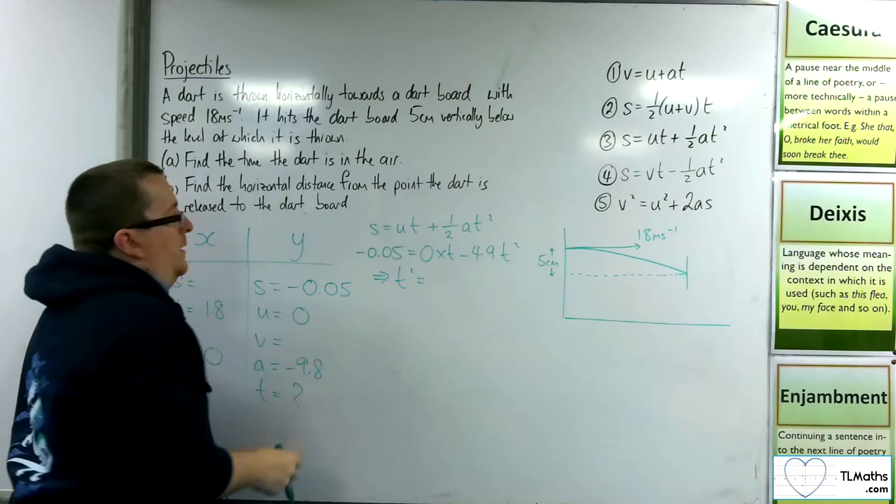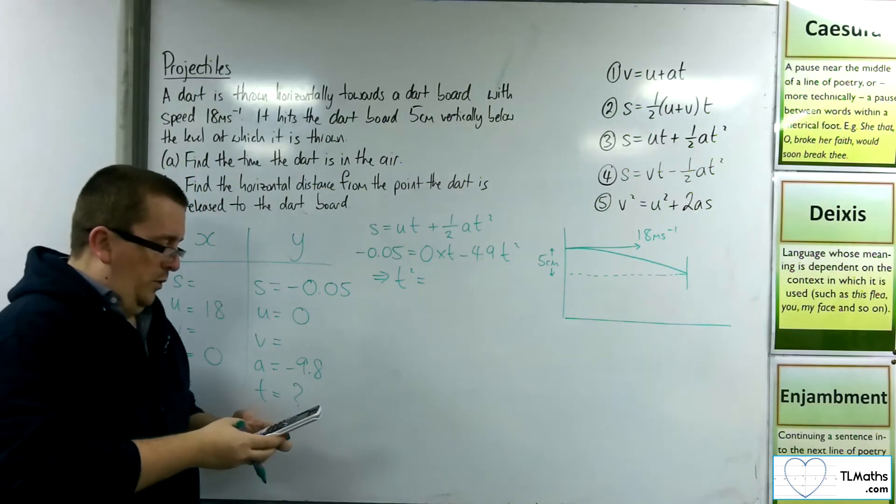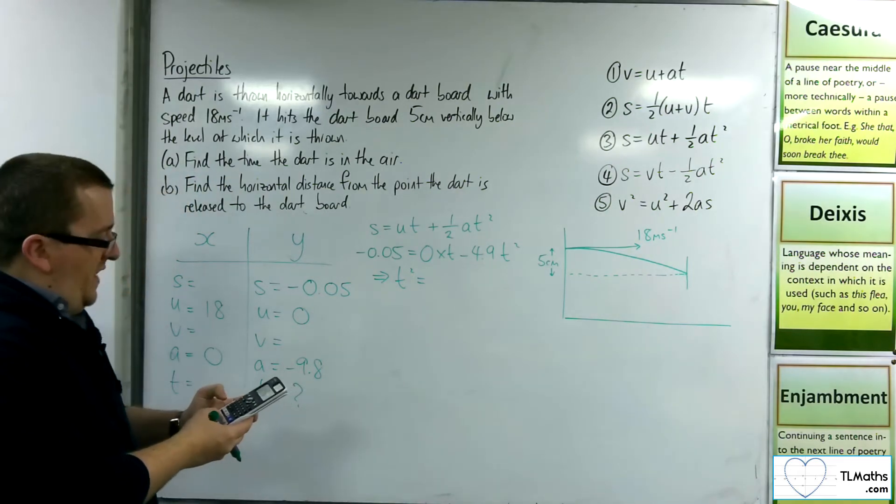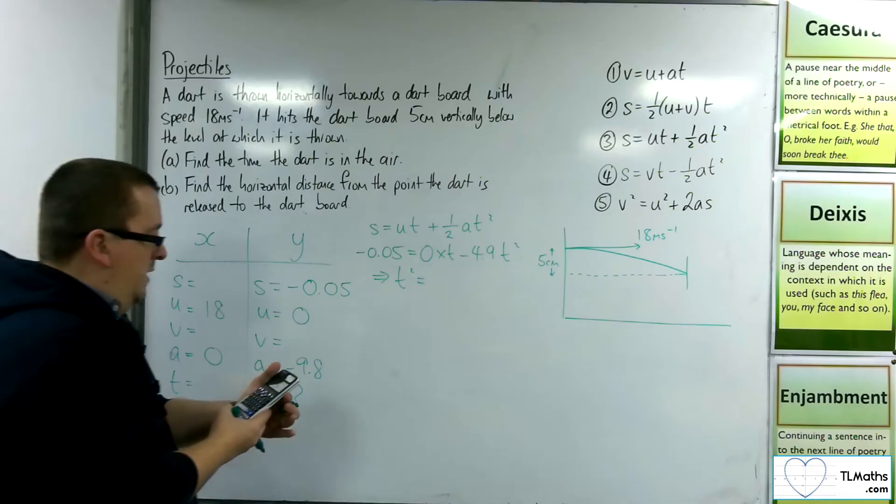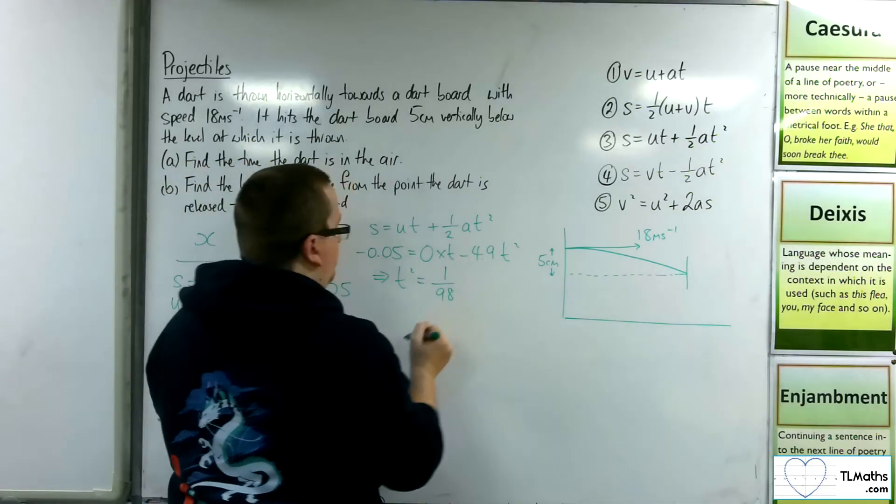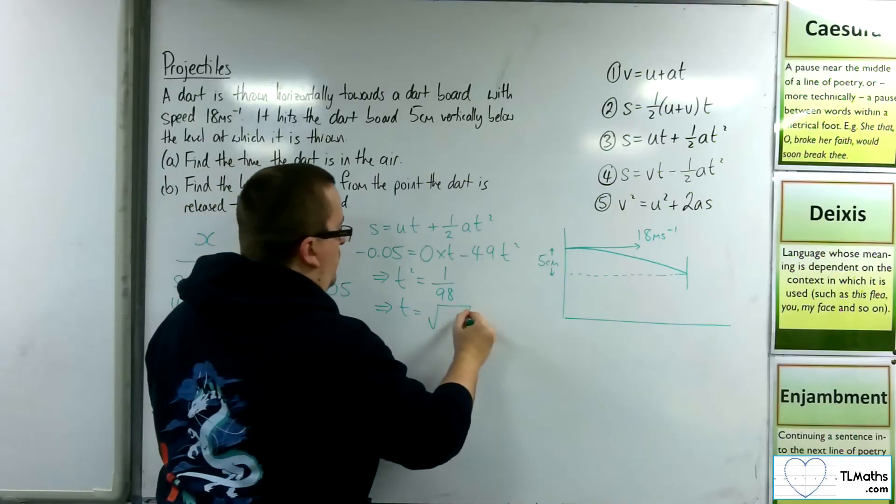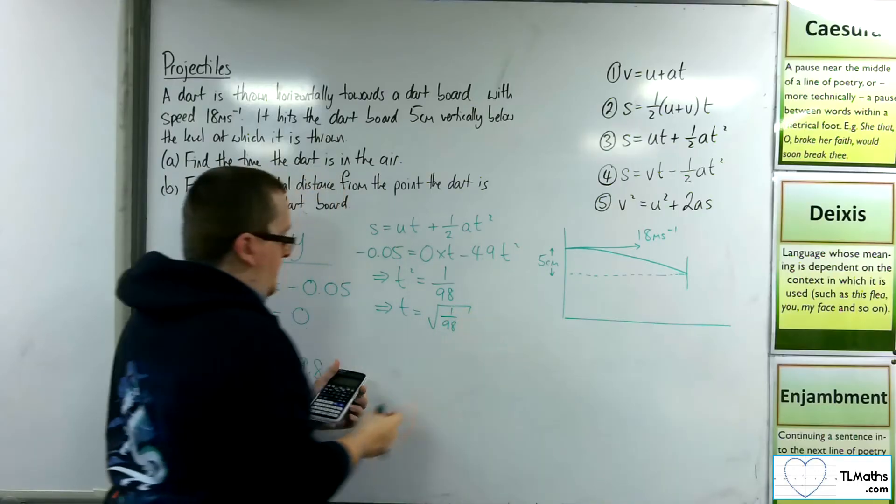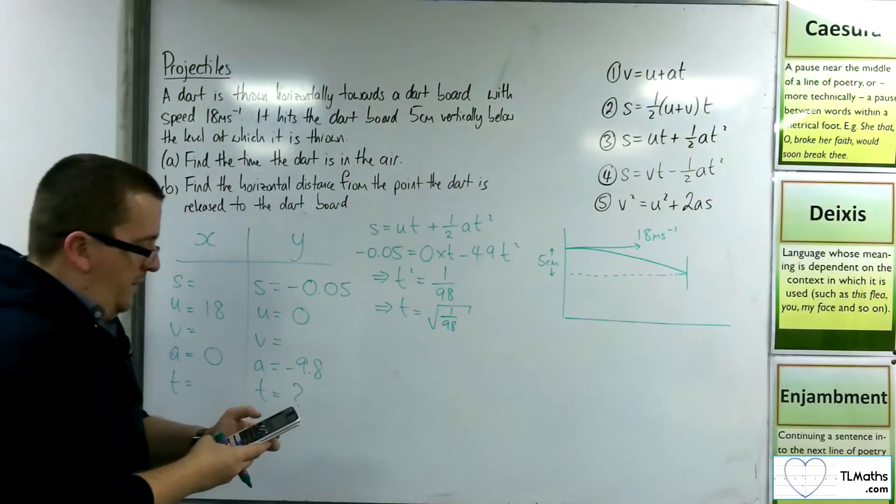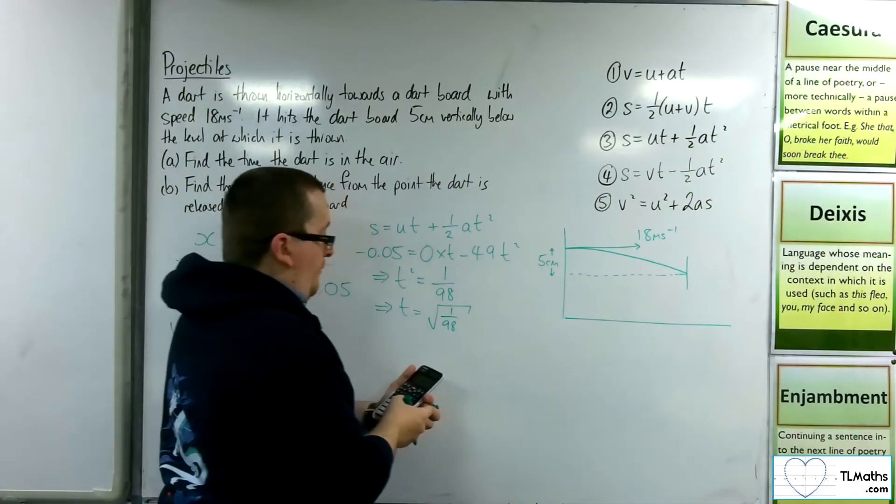Okay, so if I do minus 0.05 and divide that by minus 4.9, we get 1 over 98. So that means that t is the square root of 1 over 98. So square root of that is root 2 over 14.